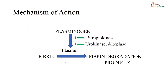Now, look at the mechanism of action of thrombolytics. Plasminogen is converted to plasmin. You have various drugs like streptokinase, urokinase, or tPA — tissue plasminogen activator. Once fibrin formation is inhibited, there will be degradation to fibrin degradation products with the help of these drugs.